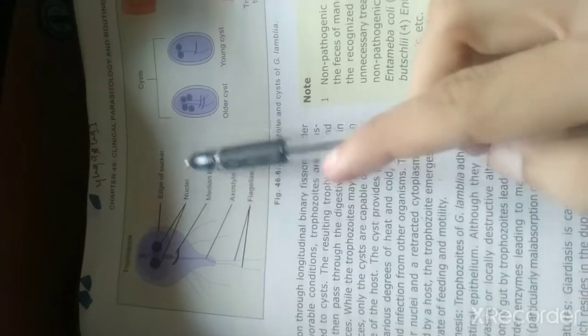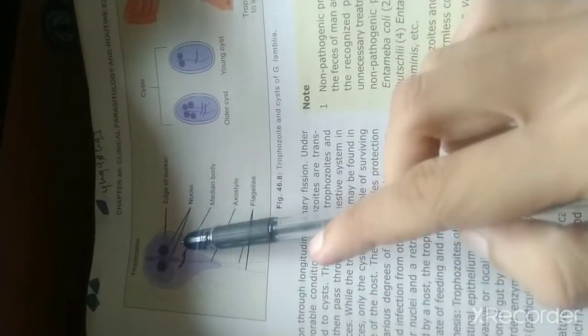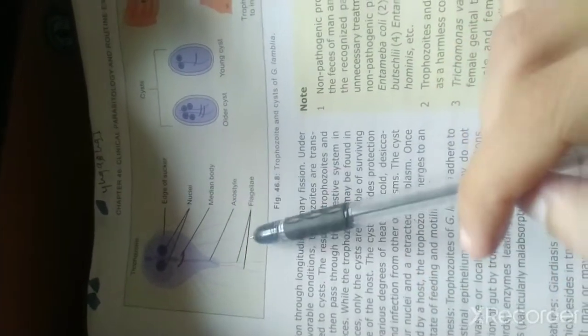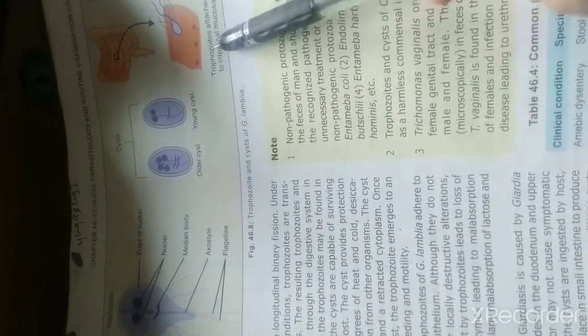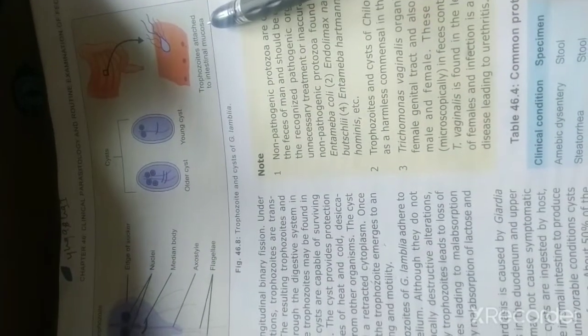This is a tennis racket-like structure. This is a median body. This is an axostyle. This is a flagella. This is a cyst, this is a young cyst. This is Trichomonas intestinalis for comparison.